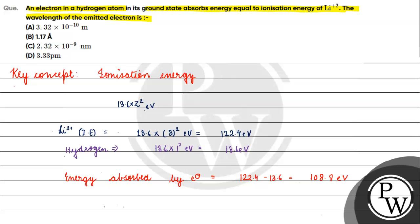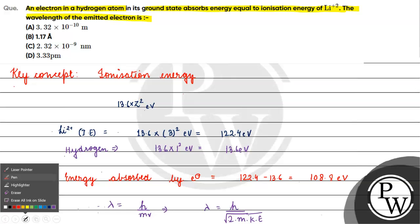Now, what is going to be the wavelength? Lambda — wavelength is equal to h divided by mv. We can also write lambda as equal to h divided by the square root of 2 × m × kinetic energy.